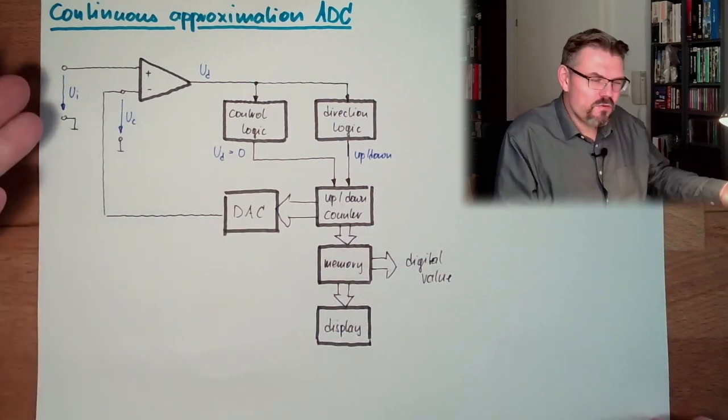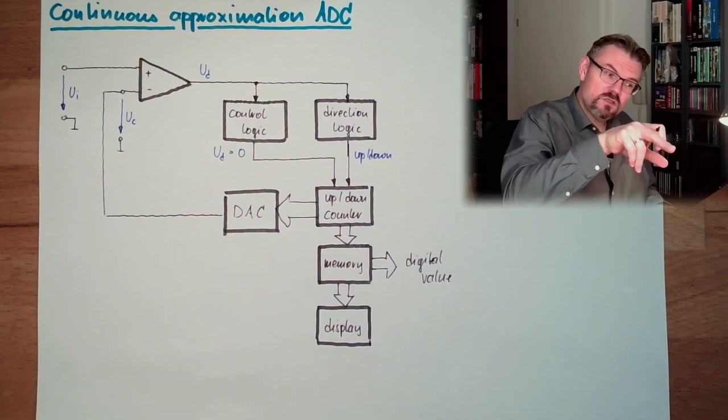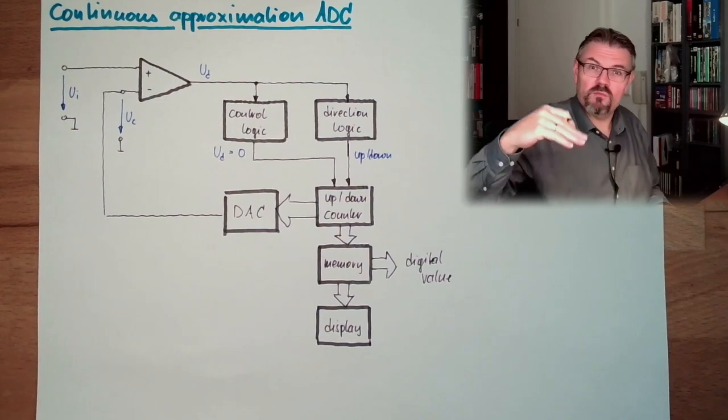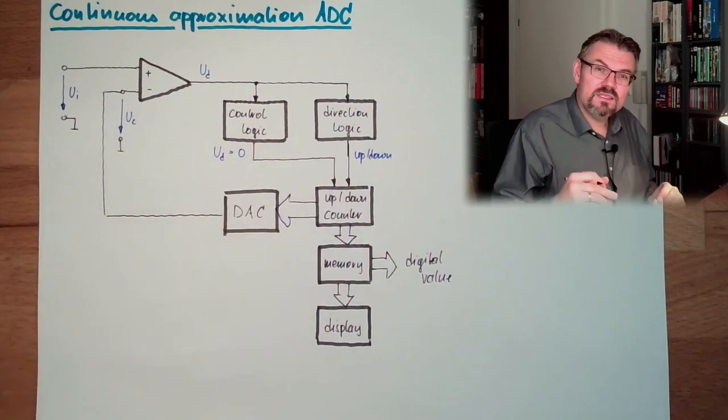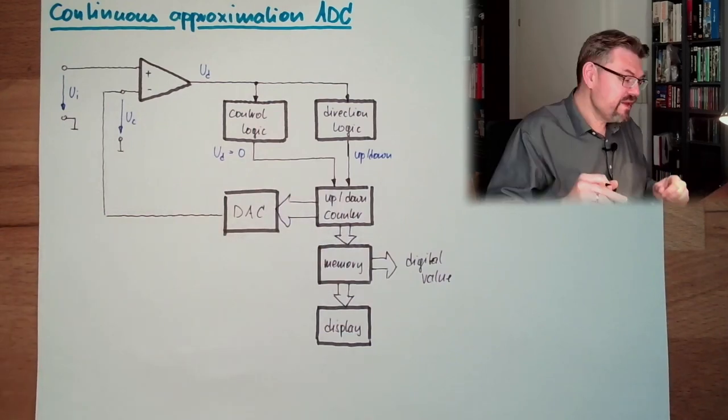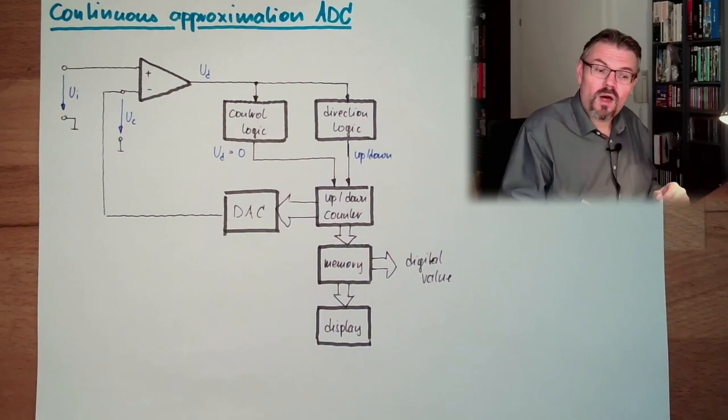Considering the fact that Ui might not jump but is a continuous voltage transformation, this will simply follow. Since we are starting at the last known value of Ui, this new value will be found rather quick.